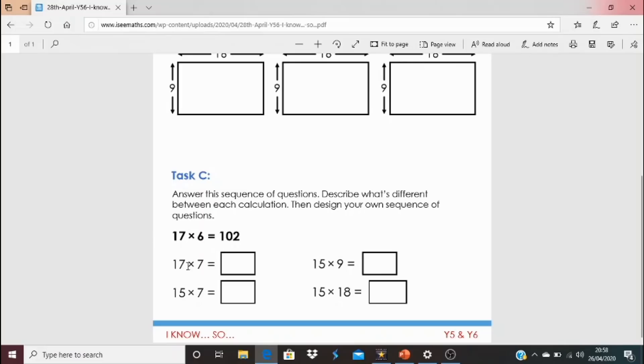17 multiplied by 6 is 102. So, what about 17 multiplied by 7? 15 multiplied by 7? How are these questions linked? 15 multiplied by 9? Then, I would love to see your own sequence of questions that you design. What's the link between the questions? How can you use one to work out the answers to the other?